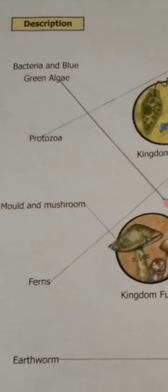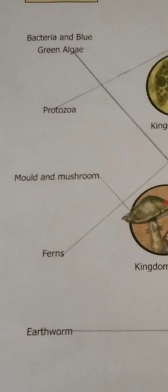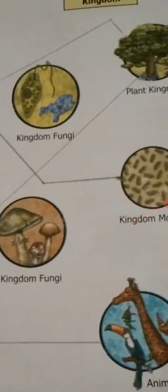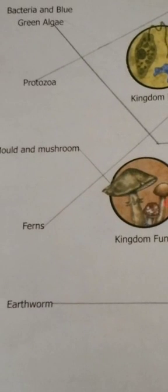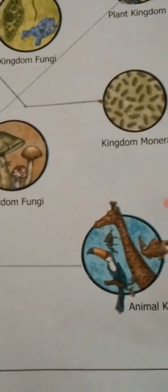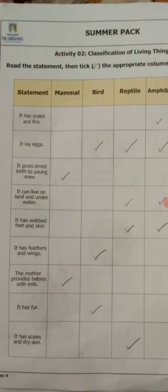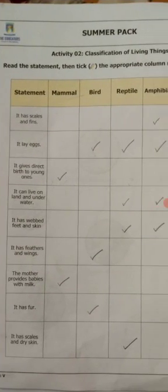Mold and mushroom match to kingdom Fungi. Next, ferns match to the plant kingdom. Last, earthworm matches to the animal kingdom. Is it clear? Next, on page 40, our second activity is: read the statement and tick the appropriate column next to it.